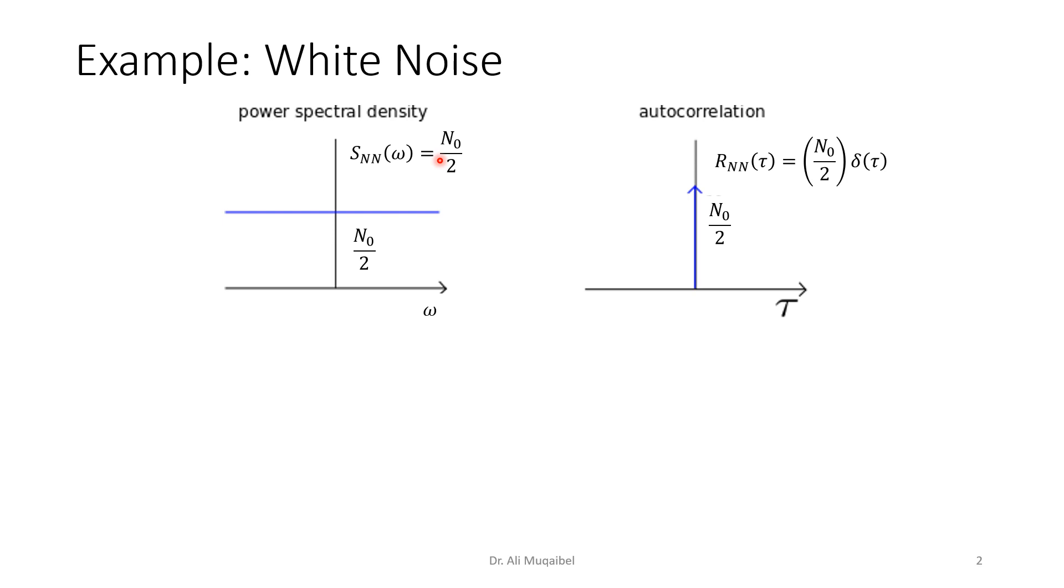This constant value is called n₀ over 2, and we'll see why in a second. This amplitude is n₀/2. If you do the inverse Fourier transform in the time domain, we'll get a delta function. The inverse Fourier transform of a constant is delta. White noise is an example where the samples are uncorrelated, so we get a large value when comparing two samples spaced by zero, but then we get zero all the way.